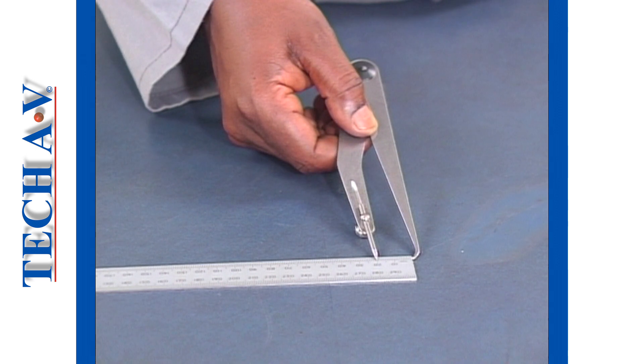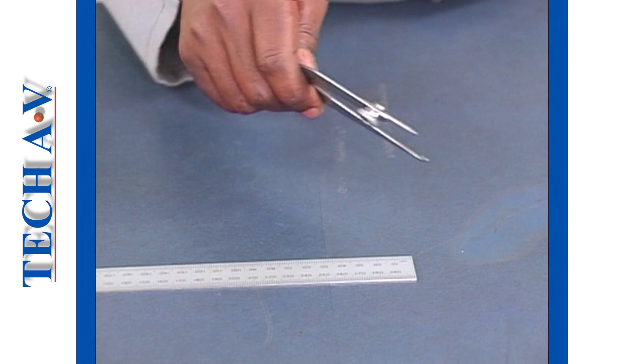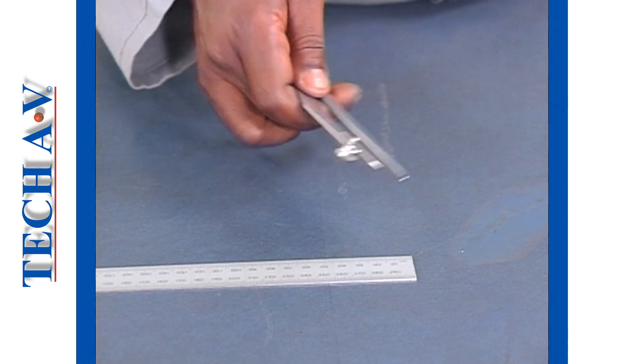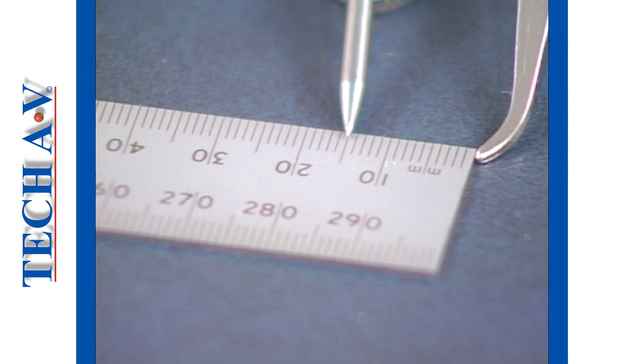To make a fine adjustment, hold the caliper as demonstrated and tap the curved leg softly to close the gap. Re-check the opening distance. Repeat the fine adjustment until the pointer lines up with the 15mm mark.